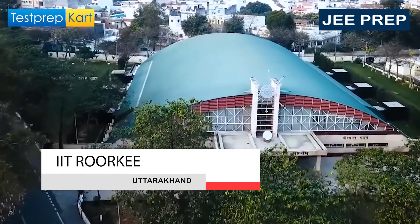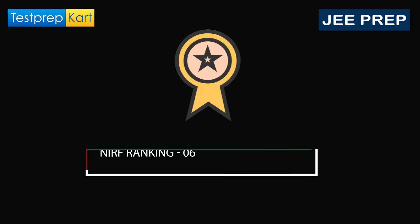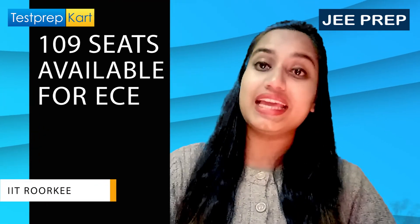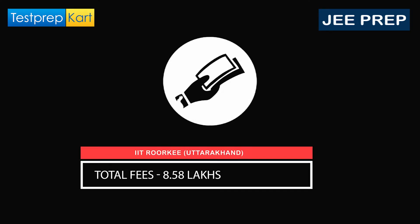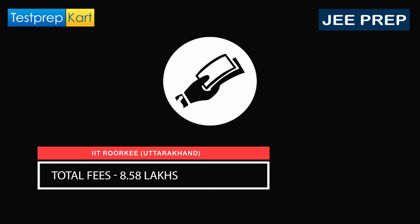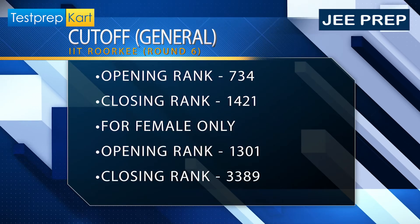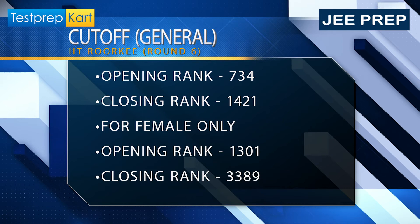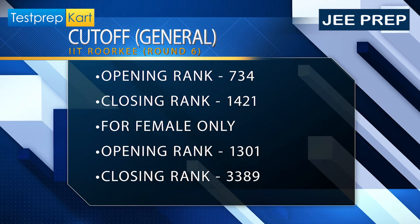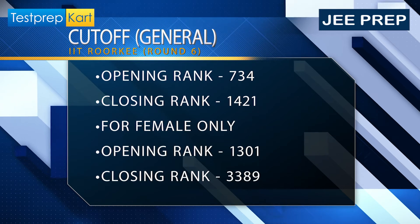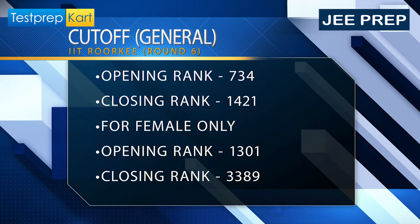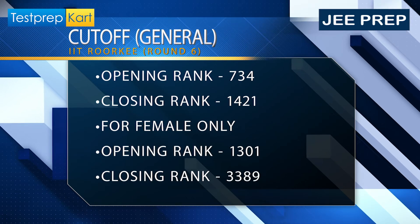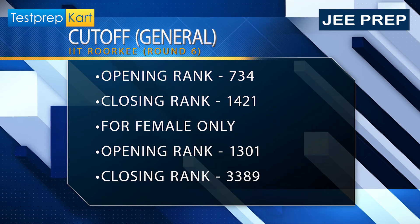Next we have IIT Roorkee, which is in Uttarakhand, with a NIRF ranking of 6. The seats available in the ECE branch are 109, and the total fees is around 8.58 lakhs. For the 2021 Round 6 general category cutoffs, the gender-neutral opening rank was 734 and the closing rank was 1421. For females, the opening rank was 1301 and the closing rank was 3389.